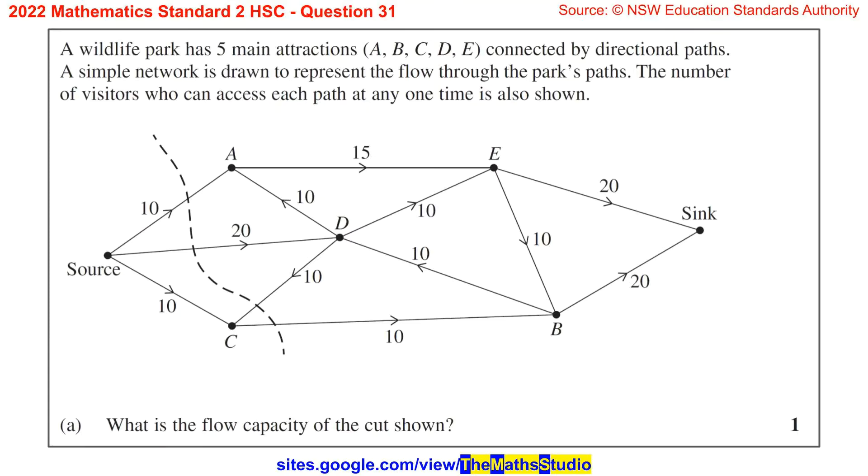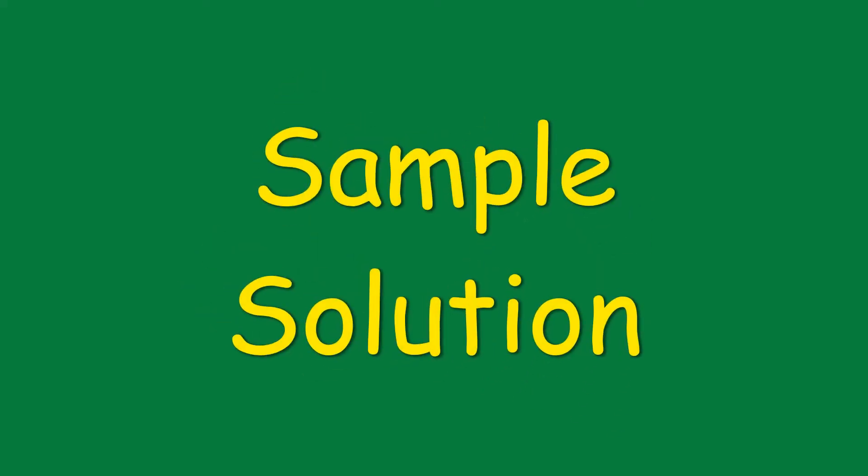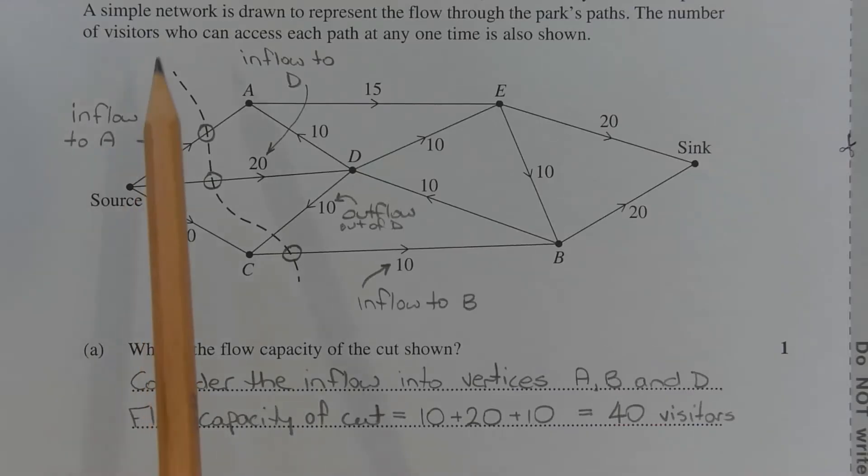Part A. What is the flow capacity of the cut shown? The cut shown cuts the inflow into vertex A, vertex D, and vertex B.